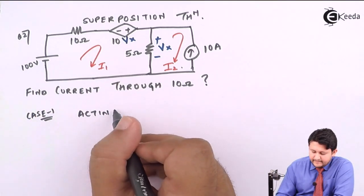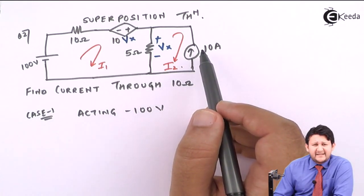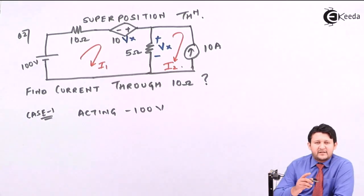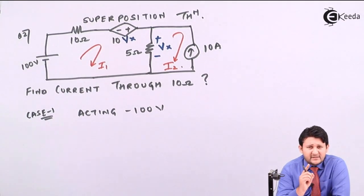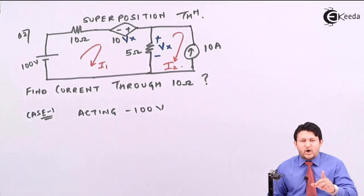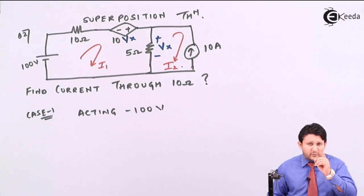Case 1: 100V acting. When I use the 100V source, I need to remove the 10A current source. To remove a current source, I replace it with its internal resistance. Since the internal resistance of a current source is infinity, I open-circuit the current source. For a voltage source, the internal resistance is zero, so I short-circuit it.